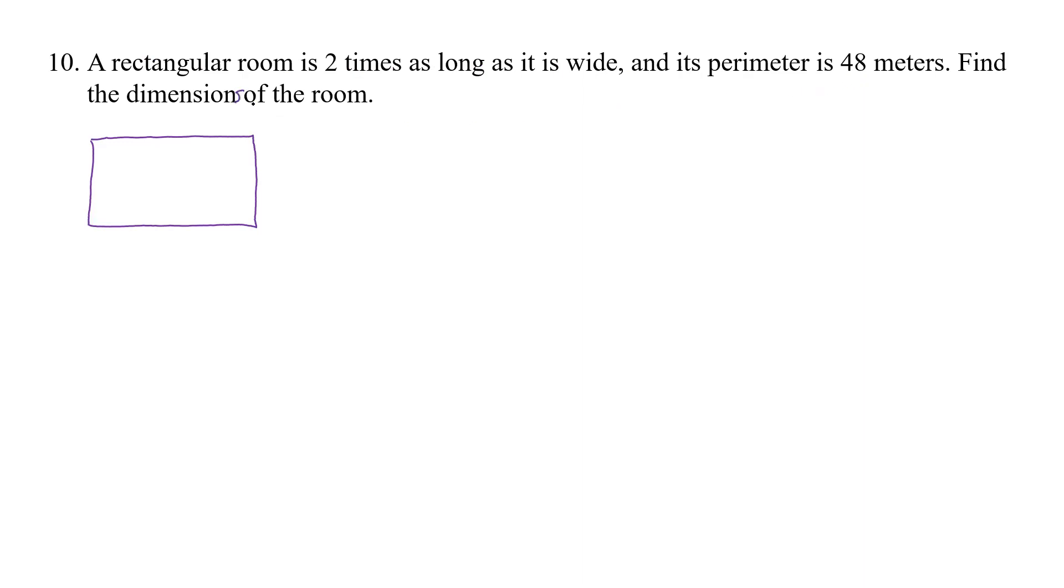And it should probably be dimensions. So perimeter is equal to 48 meters. The room is two times as long as wide. So if this is wide, long is equal to two times that.